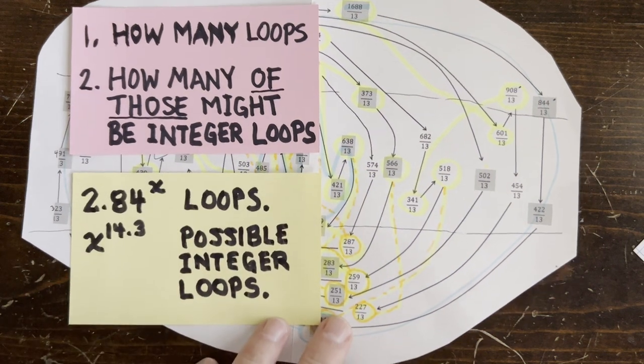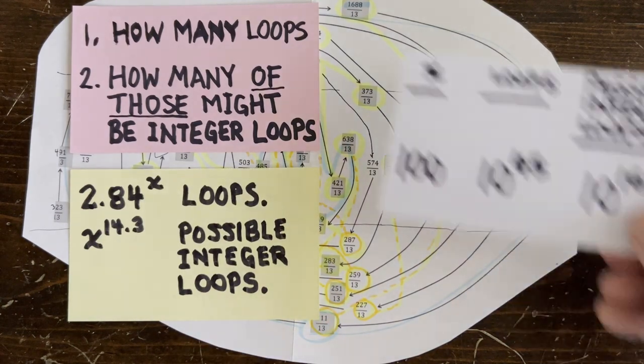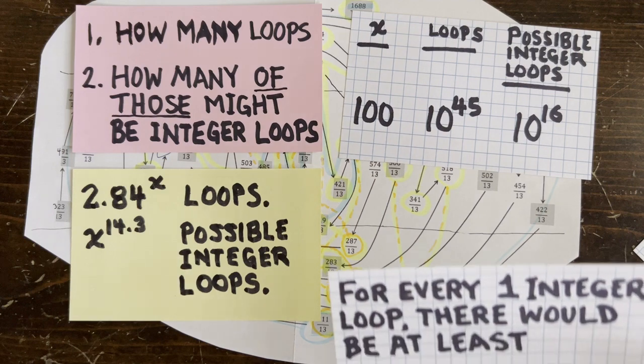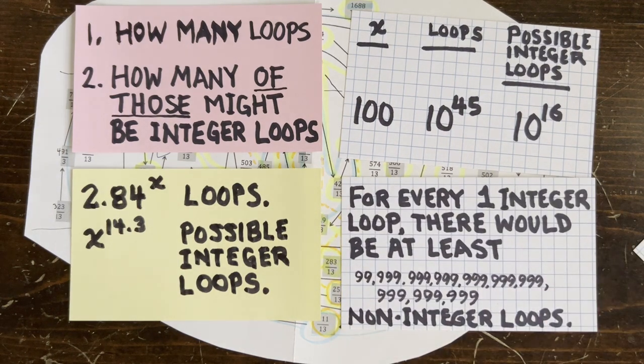For example, for a modest x equals 100 loops with 100 odd terms, we have 10 to the 45th possible loops, but only 10 to the 16th of them can conceivably be integer loops. That means for every integer loop, if there is one, there are this many non-integer loops.